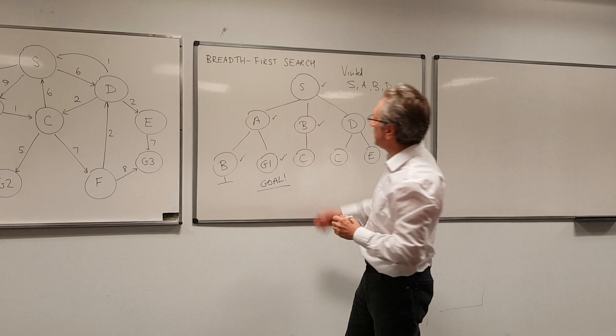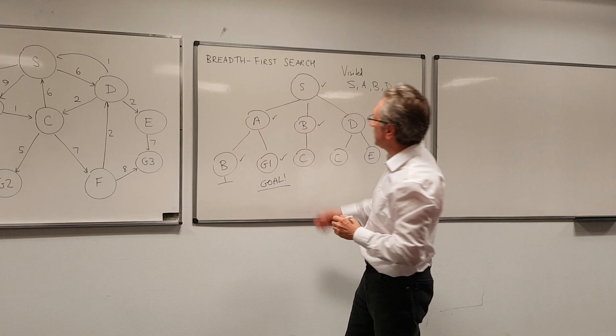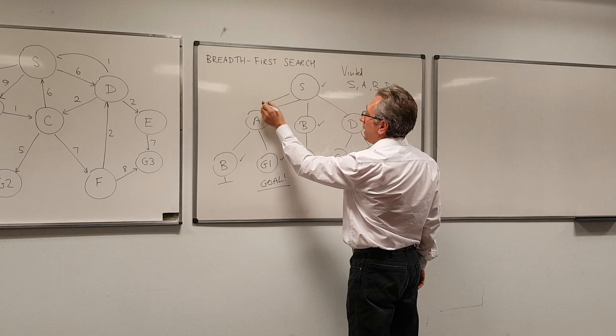So as before, we get exactly the same solution, which is that the agent needs to go from S to A, and then A to G1. But you'll notice that it did less work.